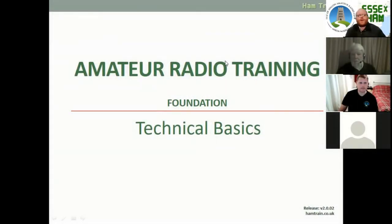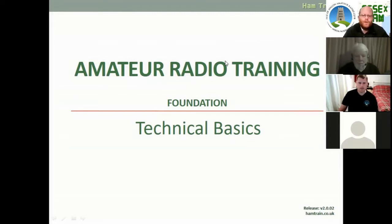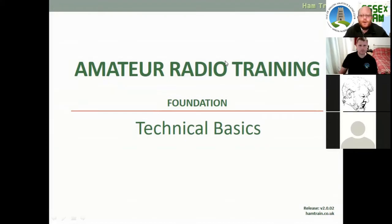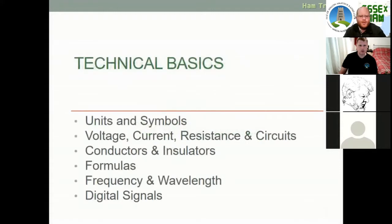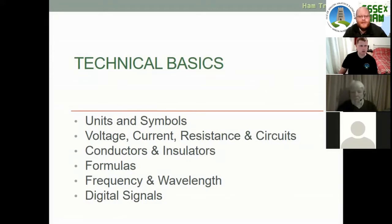Good evening and welcome to lesson two of the amateur radio training for foundation license. We're going to go through the technical basics this evening, building on what we did last week and introducing some new technical elements. We're going to cover units and symbols, voltage, current, resistance and circuits, conductors and insulators, some mathematical formulas, frequency and wavelength, and what a digital signal looks like in comparison with an analog signal.